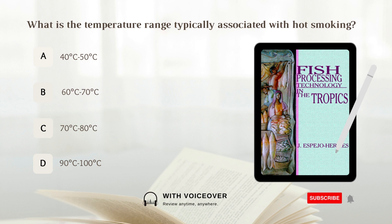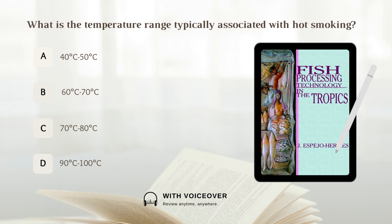What is the temperature range typically associated with hot smoking? A. 40 to 50 degrees Celsius. B. 60 to 70 degrees Celsius. C. 70 to 80 degrees Celsius. D. 90 to 100 degrees Celsius. Answer: C. 70 to 80 degrees Celsius.